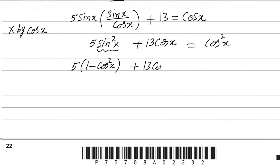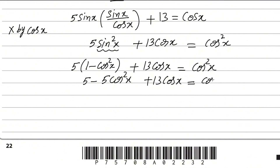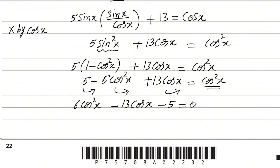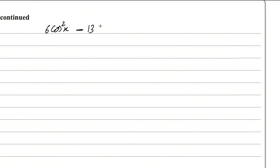After substitution we have 5(1 − cos²x) + 13cosx = cos²x. Expanding the bracket gives 5 − 5cos²x + 13cosx = cos²x. Moving all terms to the right side and combining, we get the quadratic equation 6cos²x − 13cosx − 5 = 0. This is a quadratic equation in terms of cosine.